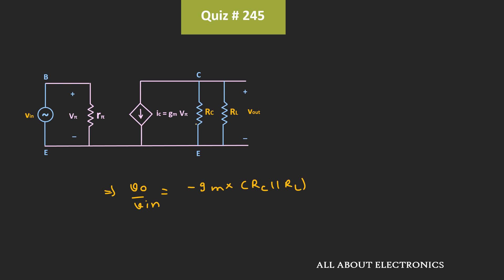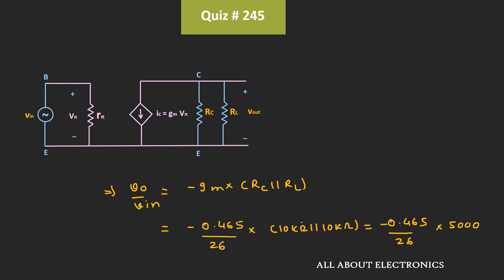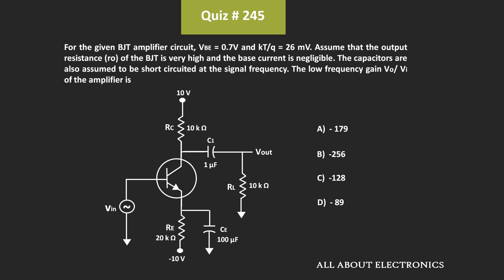Here, the value of RC and RL are both 10 kΩ. That means Vout/Vin is equal to minus of 0.465 divided by 26 mV, times 10 kΩ in parallel with 10 kΩ — that is equal to minus 0.465 divided by 26 times 5000. If we calculate the value, then the voltage gain will come out as minus 89.42. That means for the given amplifier circuit, the voltage gain Vout/Vin is equal to minus 89. So for the given question, D is the correct answer.